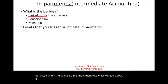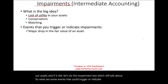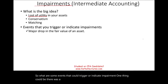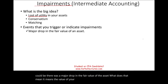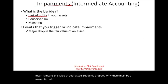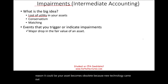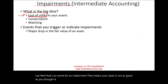What are some events that could trigger or indicate impairment? One is a major drop in the fair value of the asset — for example, if the asset becomes obsolete because new technology came out. That's an impairment indicator, meaning your asset is not as good as originally thought. It lost some utility.